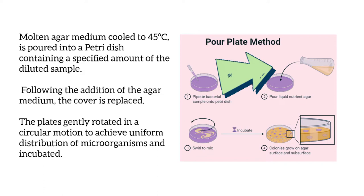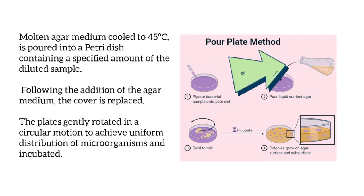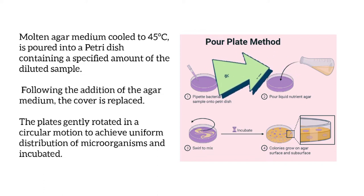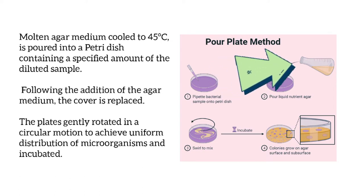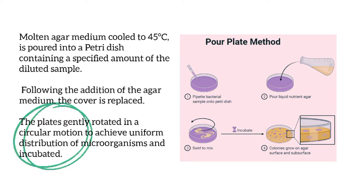Afterward, we add the molten agar medium to the petri dish. Now we have both the sample and the agar, so we will gently rotate the plates in a circular motion. We do this because we want to uniformly distribute the microorganisms into the plate.